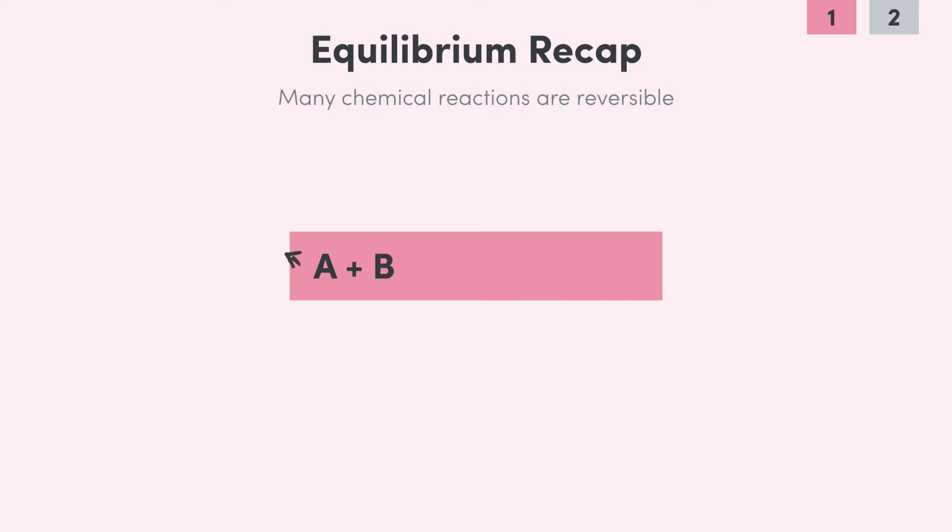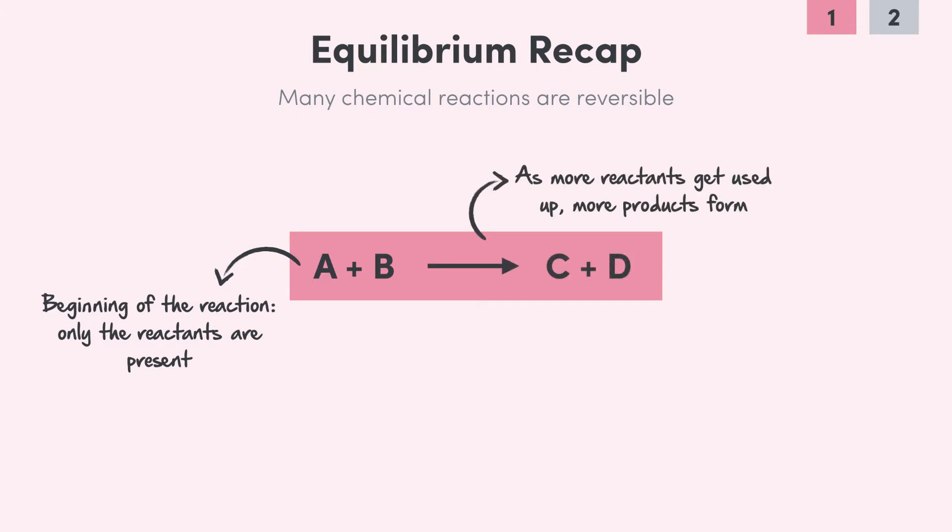Now at the very beginning of the reaction we'll only have the reactants, A and B. As the reactants get used up, more and more of C and D will be formed. The point at which these concentrations no longer change with time is a state of equilibrium.